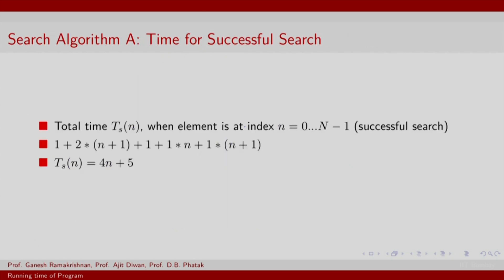So, summing up, the time for successful search will incur a cost of 2. This is for the if statement, where you make an array access as well as a comparison. This will be incurred n plus 1 times. You will also have the increment operating n plus 1 times. In addition, you have these costs associated with termination, the 1 and the 1. So, overall you will find the cost to be 4n plus 5.